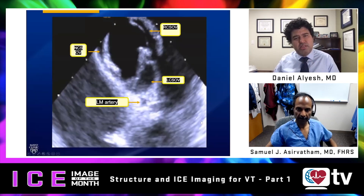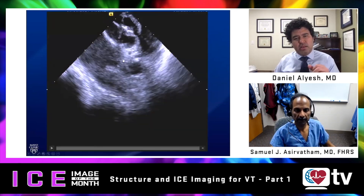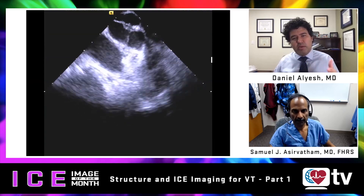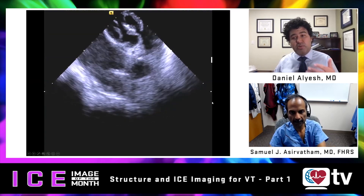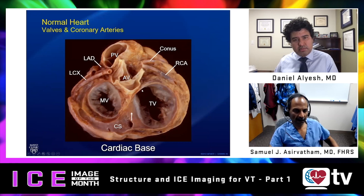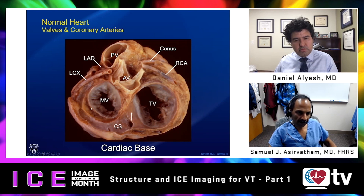Daniel asks about the relationship of the left atrial appendage to the outlined structures and about mapping ventricular arrhythmias from the lateral appendage. Dr. Aservatham responds: if we place an ICE probe and visualize the left sinus of Valsalva and the coronary vessels, the structure that will be in a posterior plane — but draping close to the left anterior descending vessel — will be the tip of the left atrial appendage.